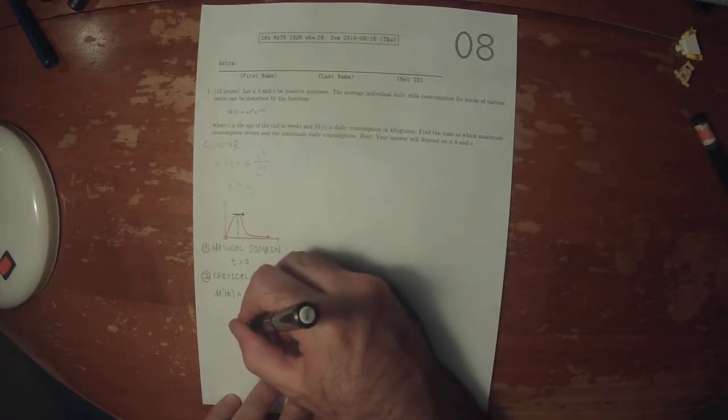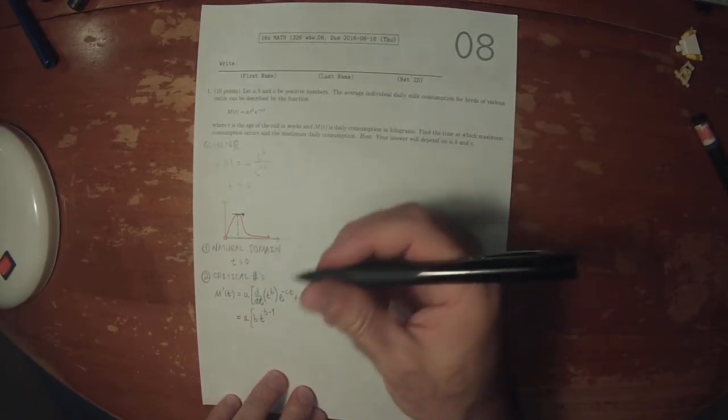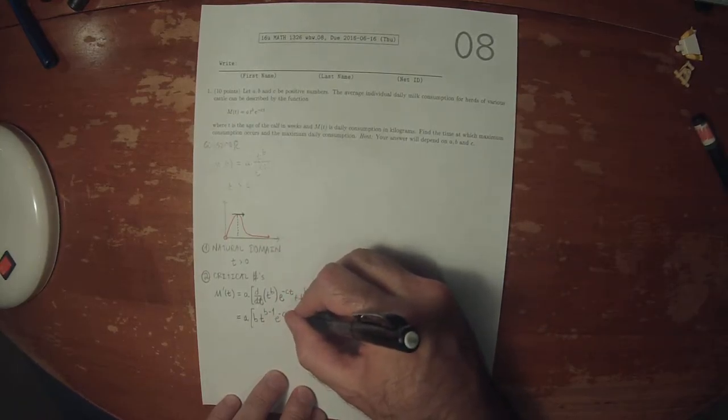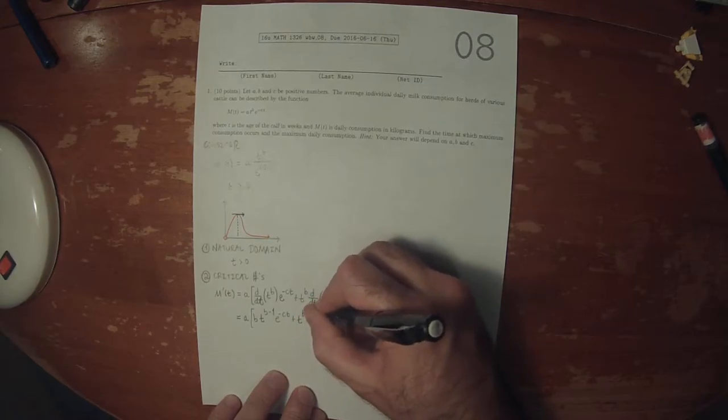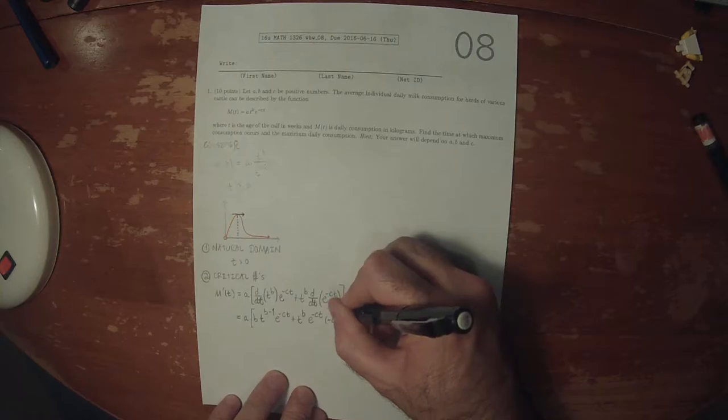So then this will be A, and then B, T to B minus 1, E to negative CT, plus T to B, E to negative CT, multiplied by negative C for the chain rule.